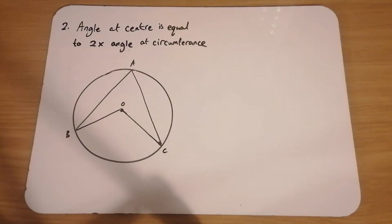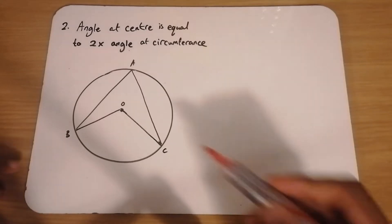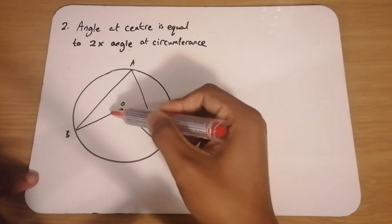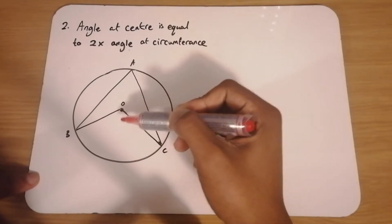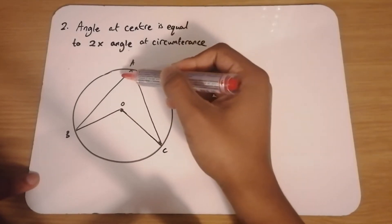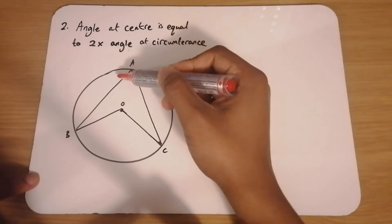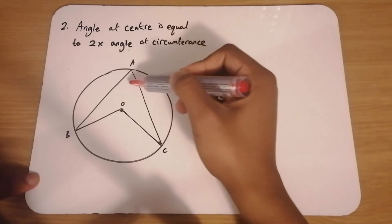The next proof is the proof that the angle at the center is equal to two times the angle at the circumference. So this angle at the center, angle O, equals two times the angle at the circumference, angle A.